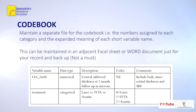The code book template includes the variable name, data type (either numerical or categorical), a description of what the data is recording, codes used — for example, zero is laser, one is IVT, and two is Avastin — and any additional comments. This can be maintained in an adjacent Excel or Word document just for your record and backup.